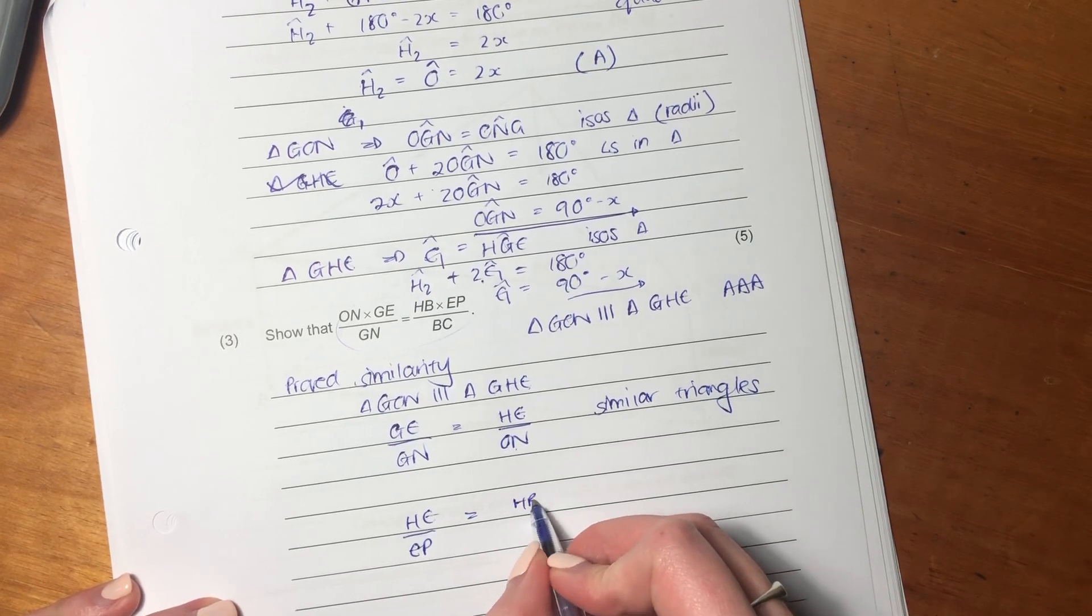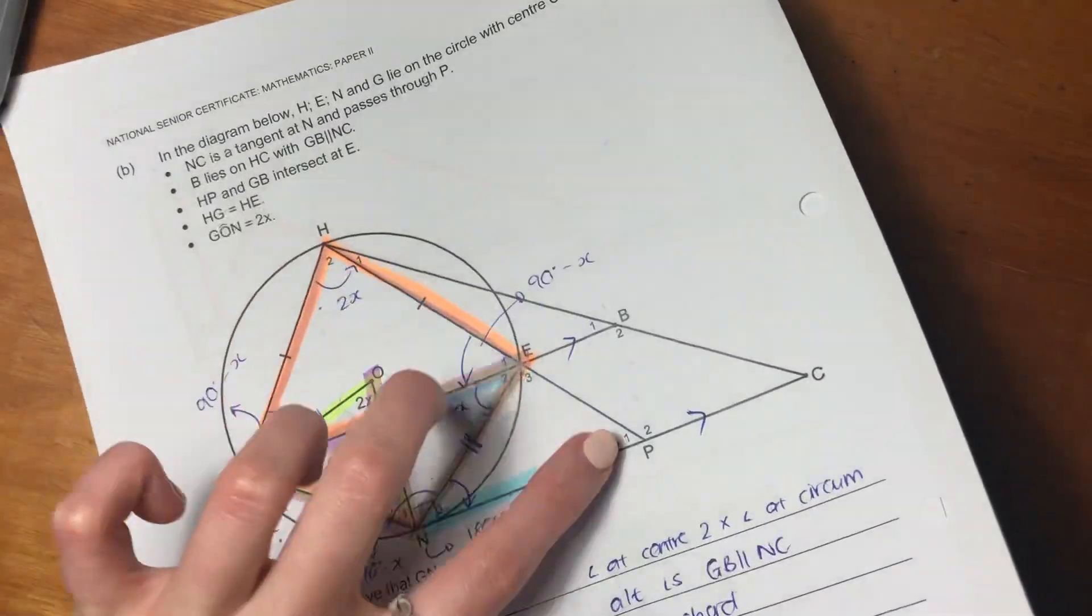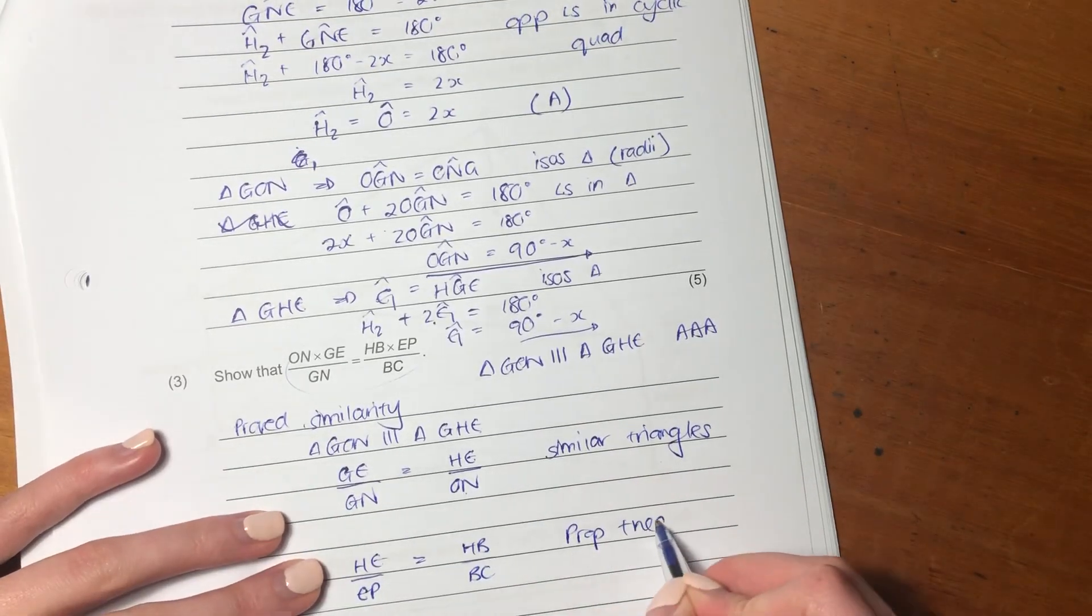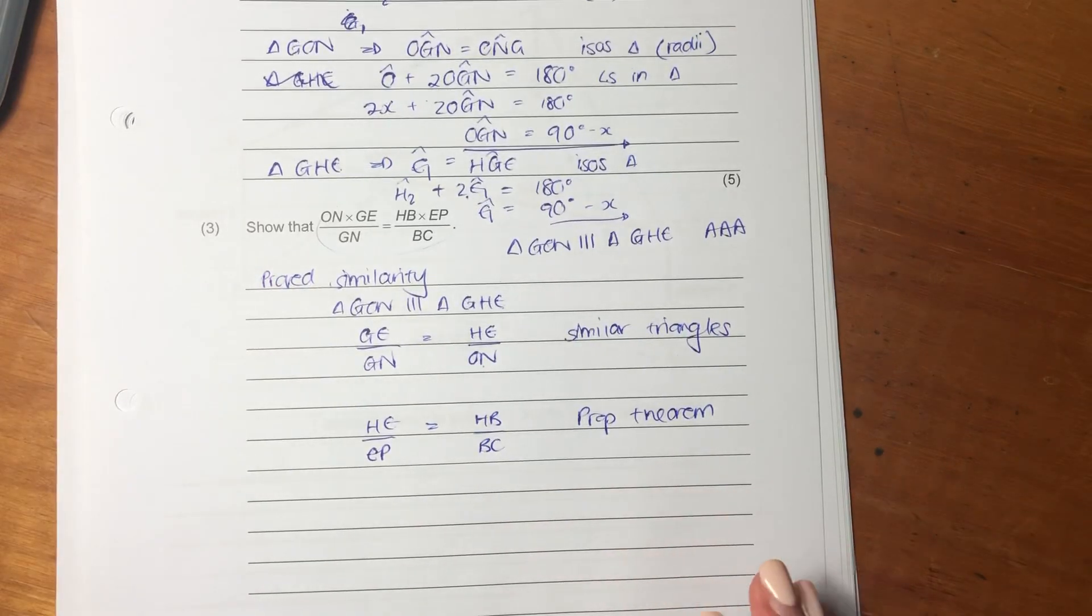H-E over E-P equals H-B over B-C. So I've literally just used my proportionality theorem. You can just say proportionality theorem. So that's what we have.